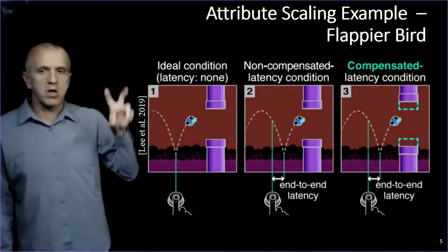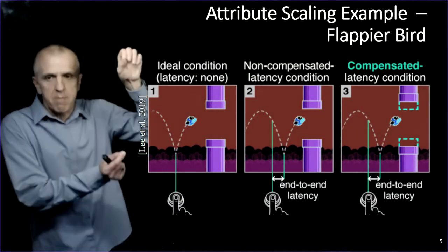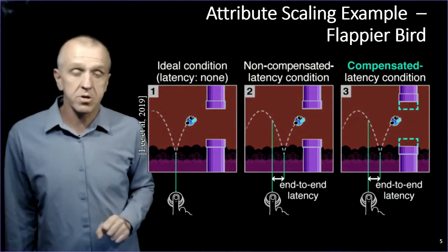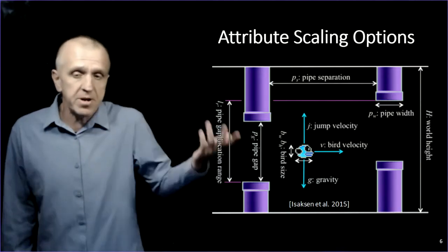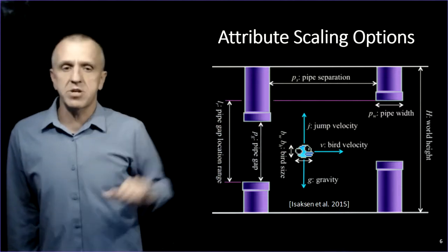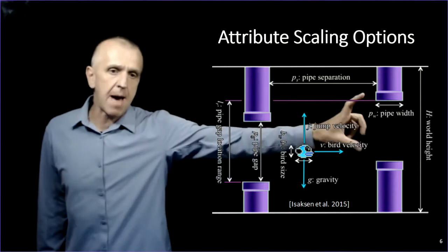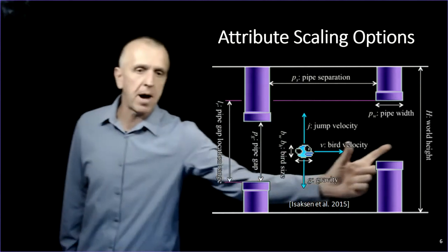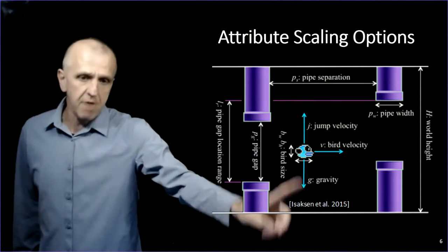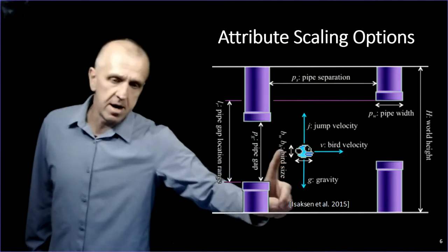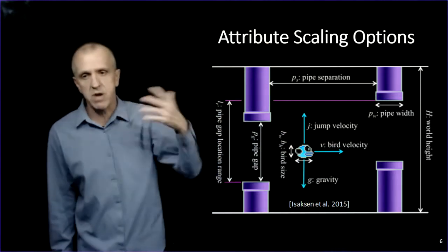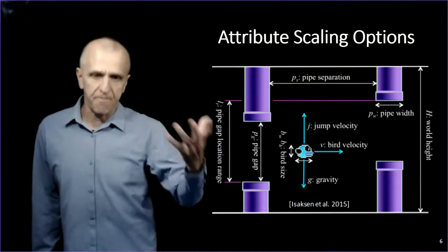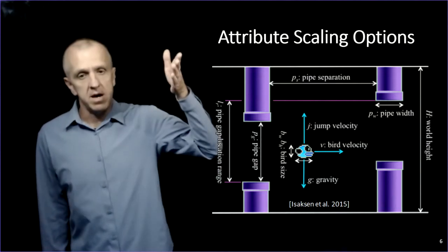So what we can do is we can do attribute scaling and we actually can change the game world. In this case, you can see in the far right picture where you've taken those pipes and spread them apart a little bit further. You made it a little bit easier for the player to actually flap and make it through that gap when there's latency. So we can do that live real time. Even a simple game like Flappy Bird has lots of attributes that can be scaled. We're talking about the gap between the pipes, but you could also change the separation, the pipe width, you can change the bird gravity, maybe jump velocity, speed. So it's a rich space that game designers can tweak in order to keep the game fun.